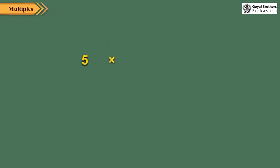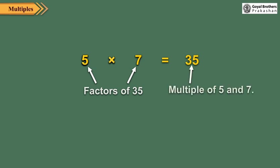In 5 multiplied by 7 is equal to 35, 5 and 7 are factors of 35. Also, 35 is a multiple of 5 and 7. Thus, we can say that factors are multiplied to get multiples.